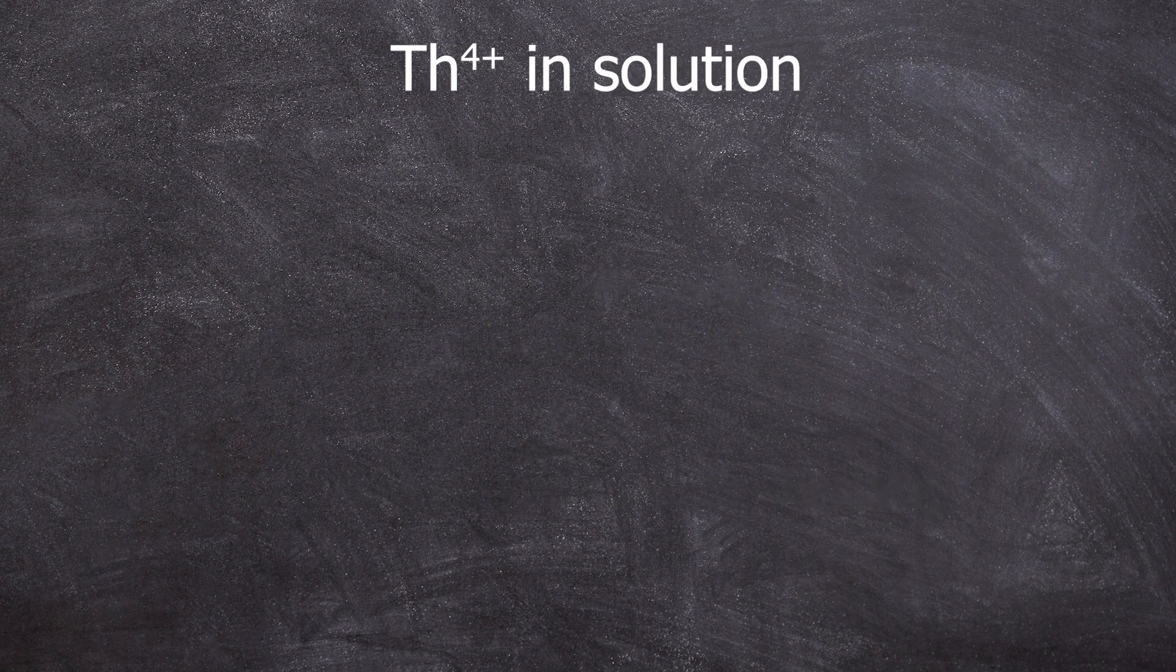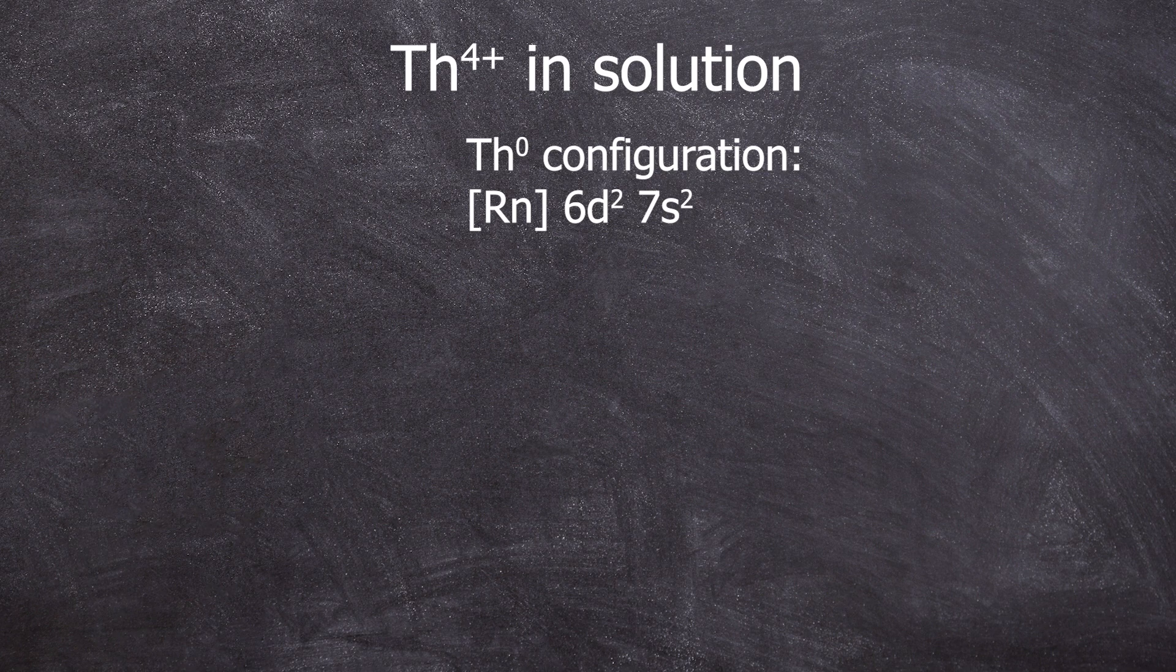Now let's cover some basics about thorium. Thorium metal has the electron configuration of radon 6D2-7S2 which is quite unusual because you would expect 7S2-5F2 for an F-block element.